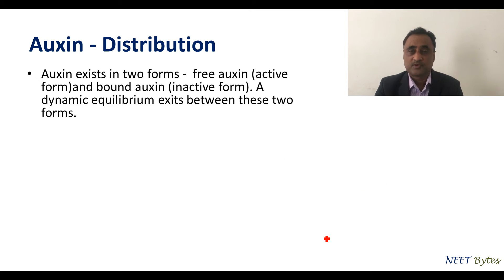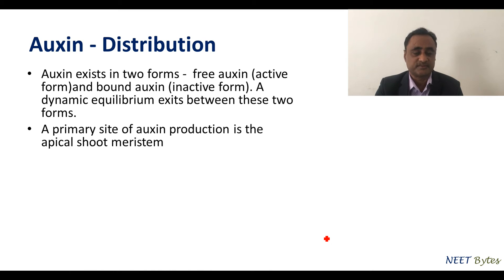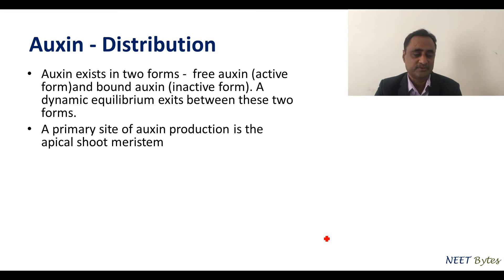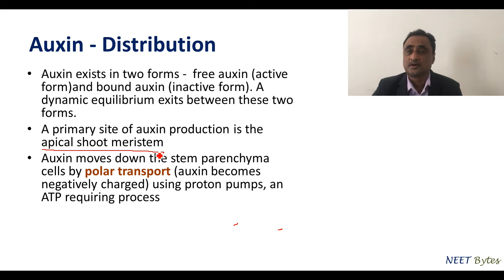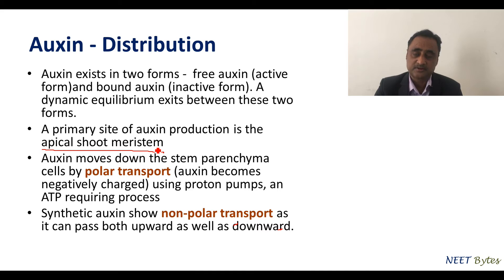Auxin is primarily present in the meristematic tissue and is found in two forms: free form and bound form, with an equilibrium between them. The primary site of auxin production is the apical shoot meristem. The transport of auxin is both polar and non-polar. Polar transport is valid only for natural auxin; for synthetic auxin, transport is apolar or bipolar.